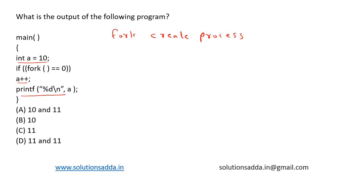The purpose of fork is to create a new process which becomes the child process of the caller. After a new child process is created, both processes will execute the next instruction following the fork system call.